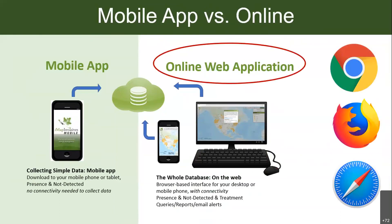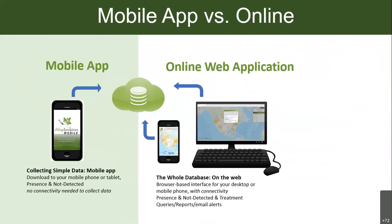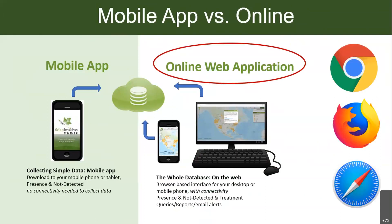Before diving in, I want to make sure we all understand the distinction between the mobile app and the online web application. The mobile app is where you record invasive species in the field — you get that from the app store. The online web application is accessed through a browser on your computer or phone at imapinvasives.natureserve.org, and we recommend using Chrome, Firefox, or Safari on iPhone.